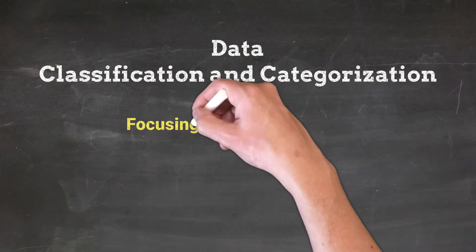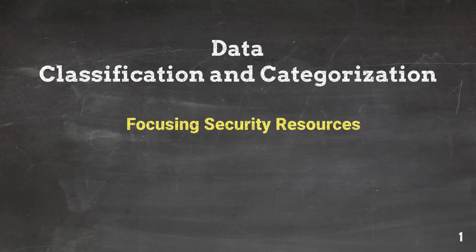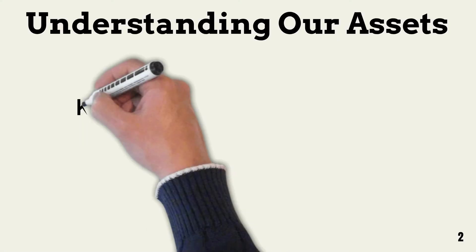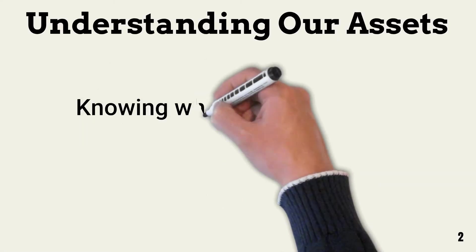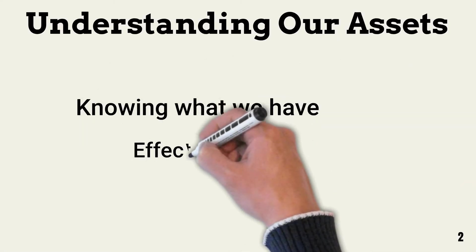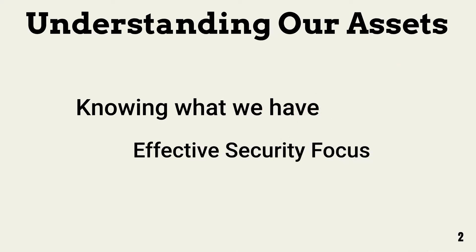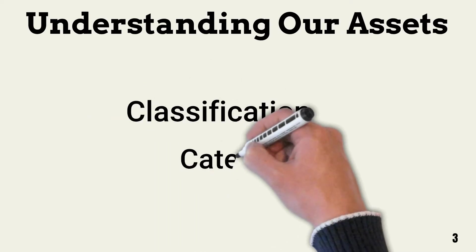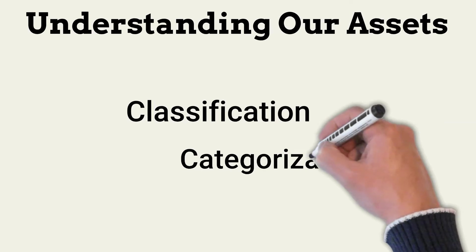In this lesson, we look at how to assess information assets to enable cost-effective security and risk assessments. I use sample data sets for classification and categorization. In order to understand our risks and how to focus our security efforts, we need to identify and assess all information assets. The two ways we assess our assets are via classification and categorization.